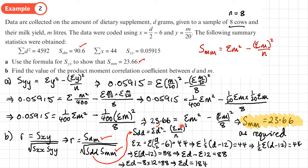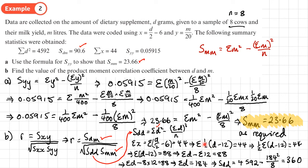Now we can work out SDD: the sum of D squared is 4592, minus 184 squared over N = 8, which gives SDD = 360. If you're unsure about the summation rules used here, there's a link in the description to a core one video that covers them in detail.